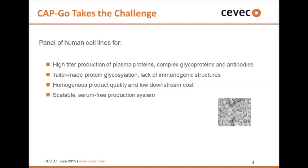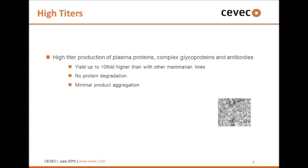These are pure suspension cells that grow in single-cell suspension. They are fully scalable to all bioreactor formats. We have a chemically-defined serum-free media designed for these cell lines, ready for CGMP production. For difficult-to-produce proteins, production rates can be up to tenfold higher compared to other mammalian cells like CHO cells. The cells have a very high degree of viability — routinely higher than 90% — so we do not see protein degradation. A low degree of product aggregation has also been observed and published by companies working with our cells.